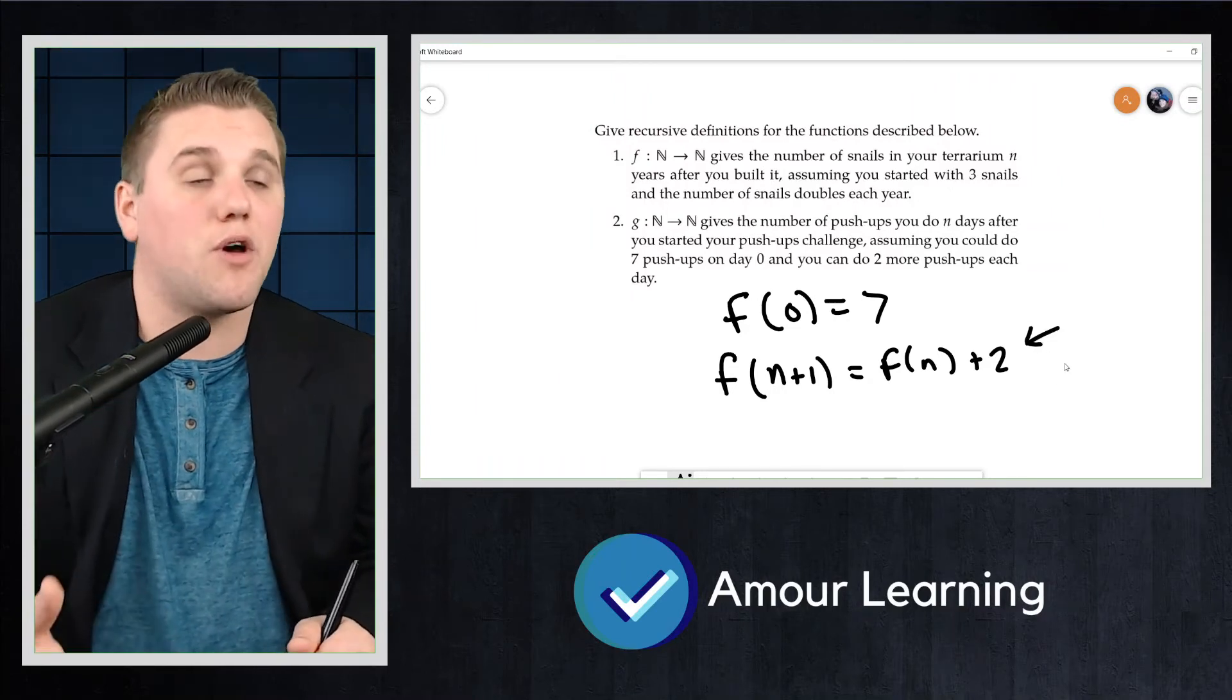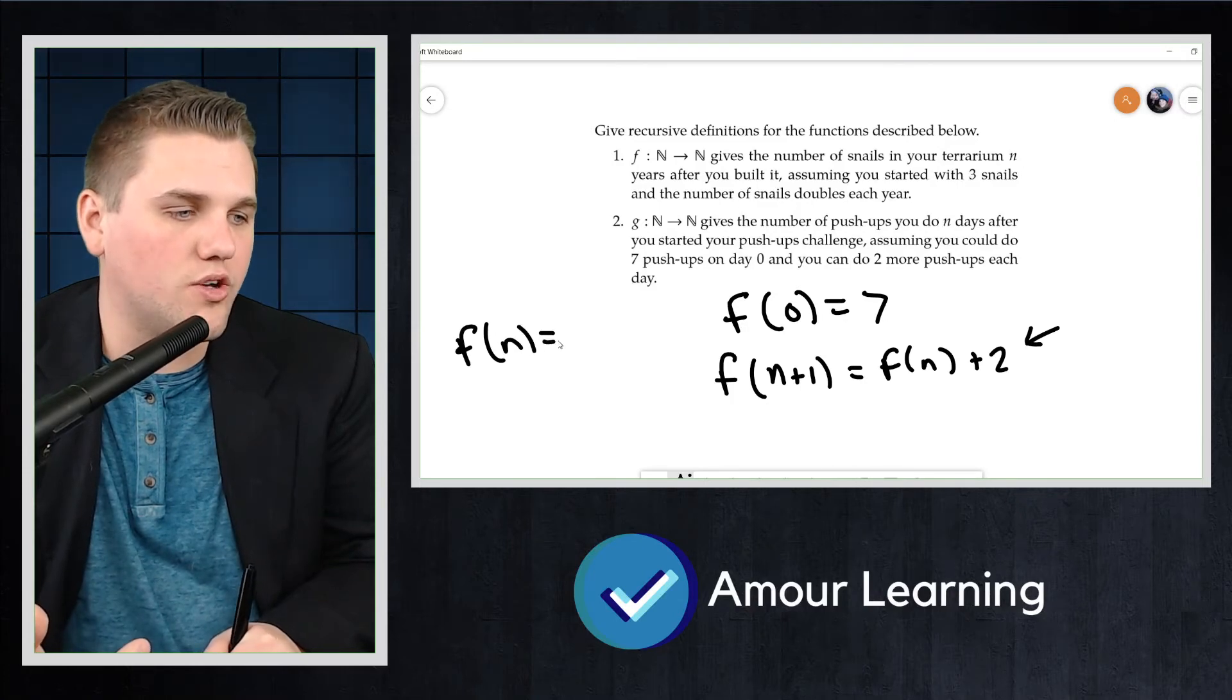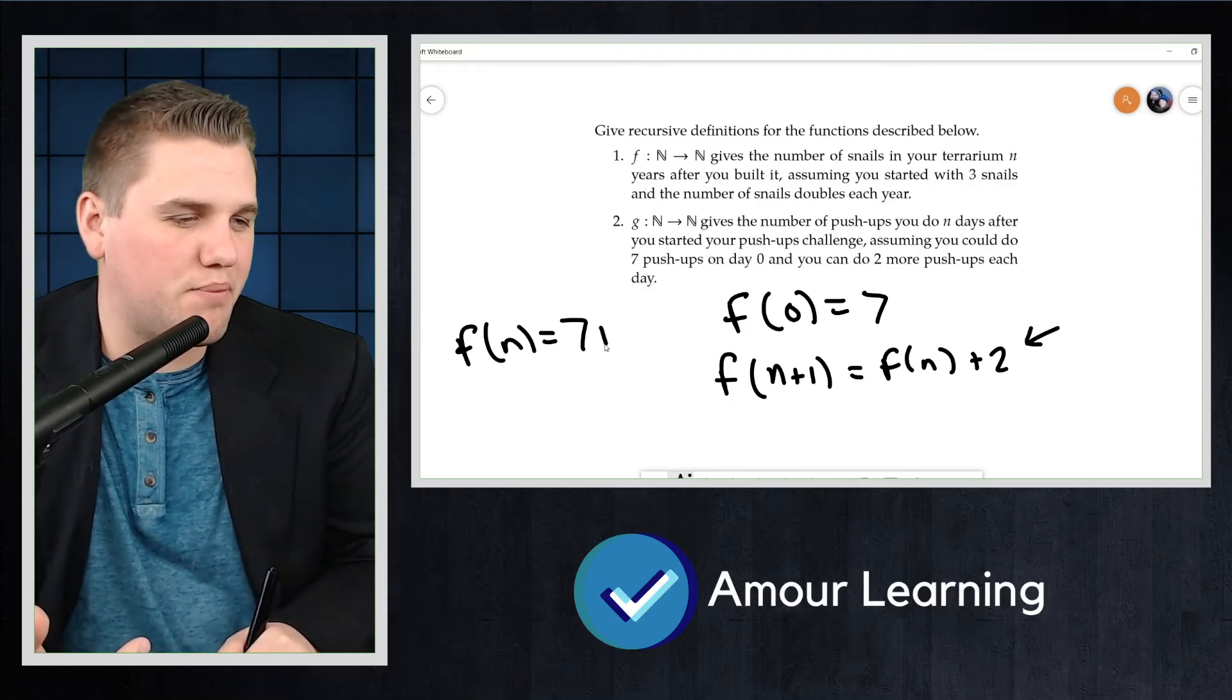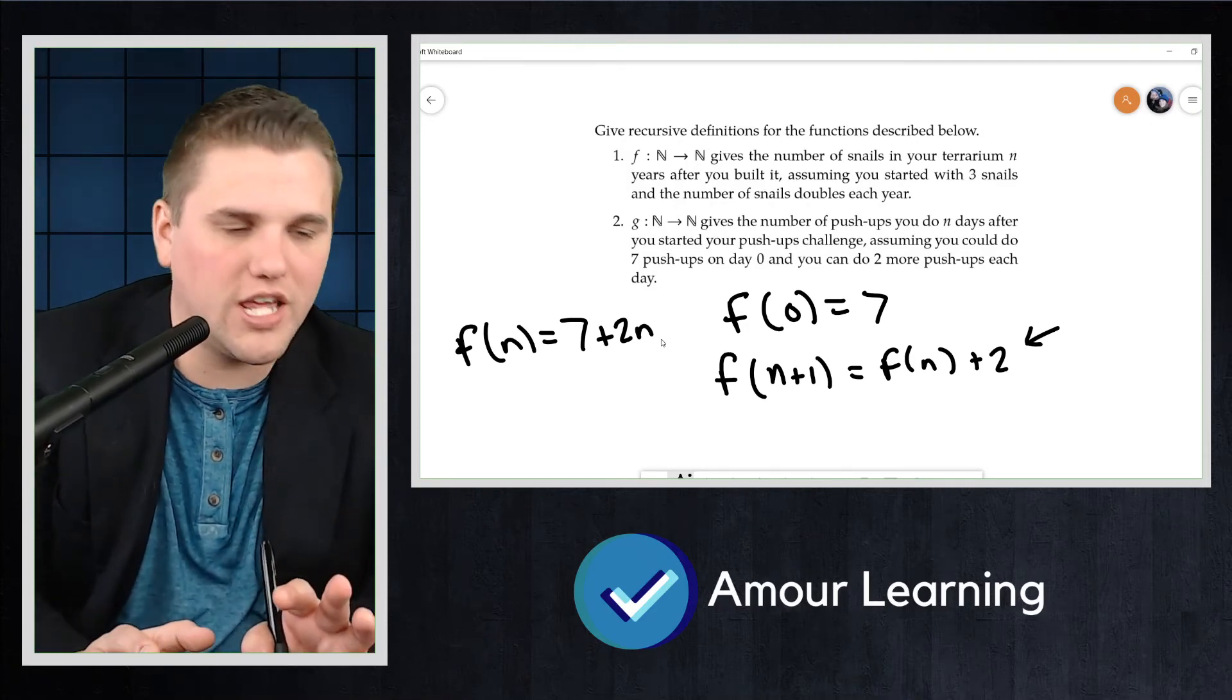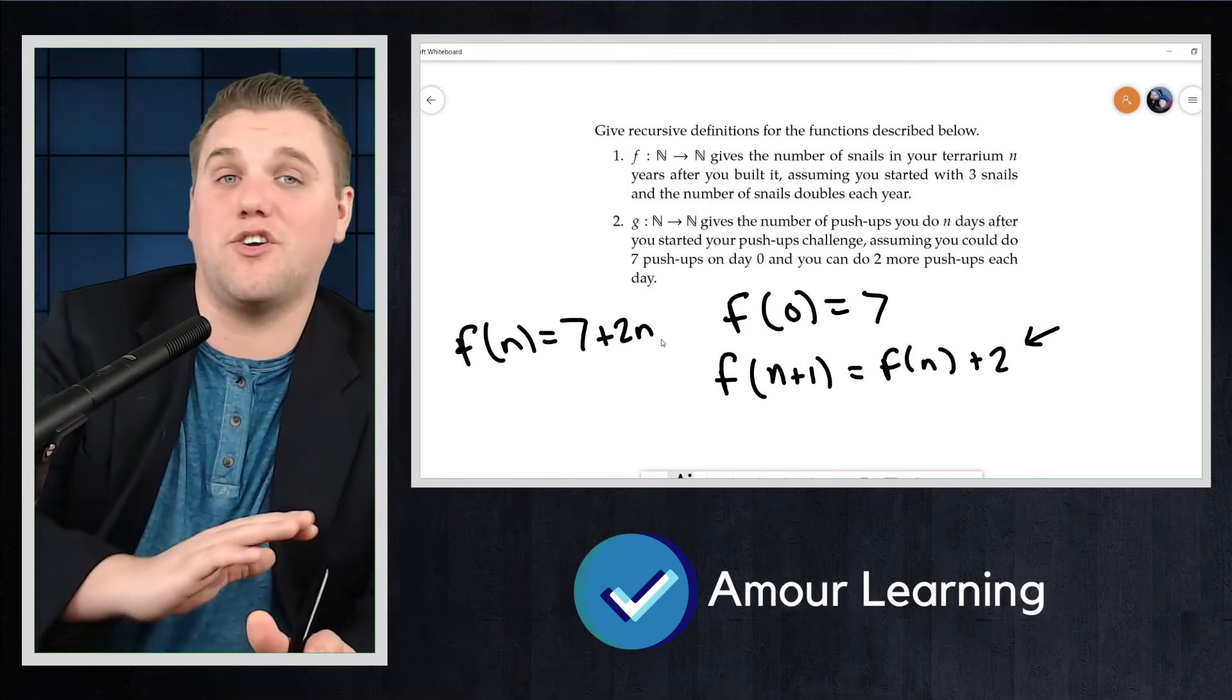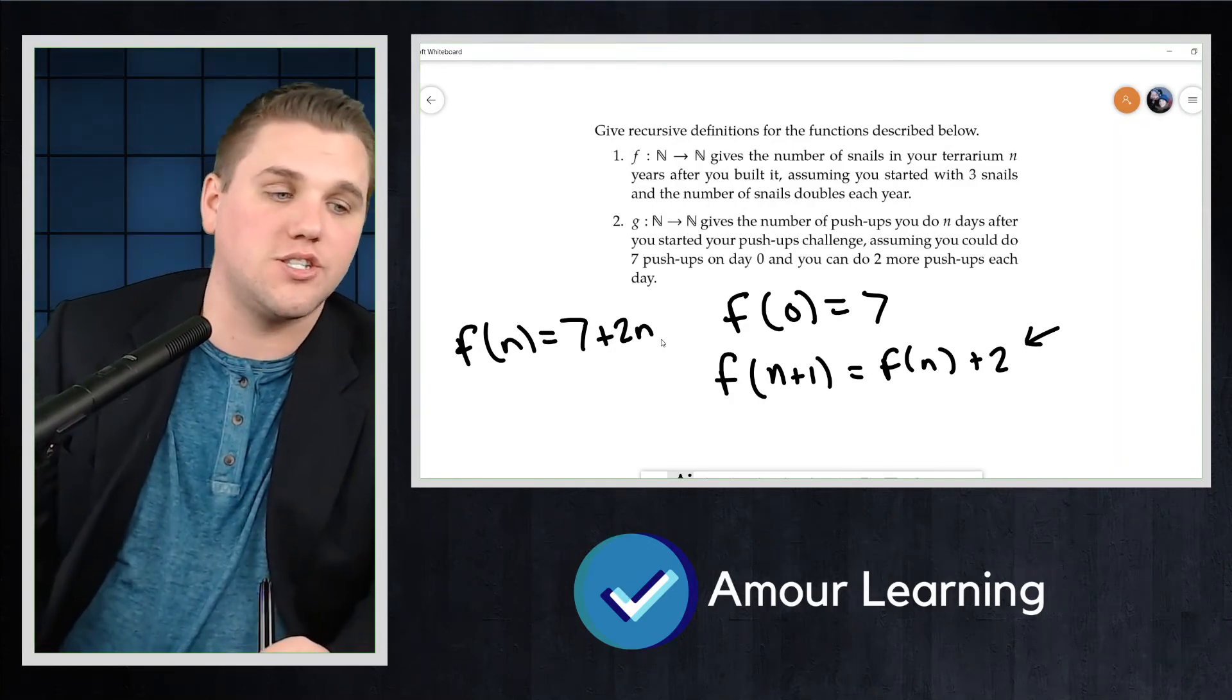Again, we could develop a closed formula. F(n) = 7 + 2n, I believe would work. Yes, and this would give me exactly how many push-ups I would do after n days. That way, I don't have to add 2 over and over again.